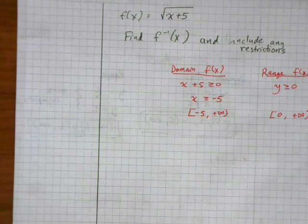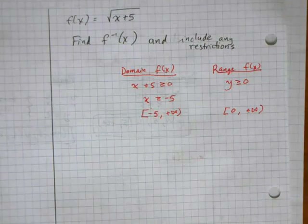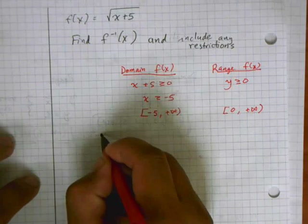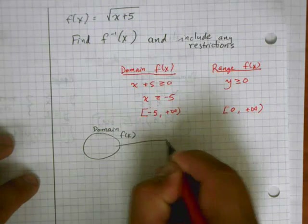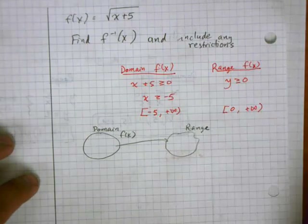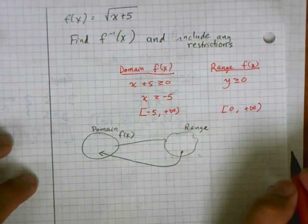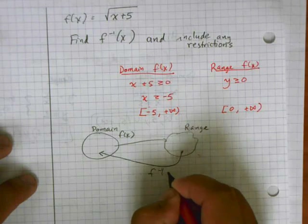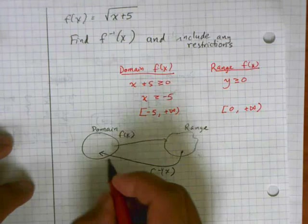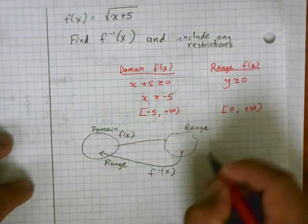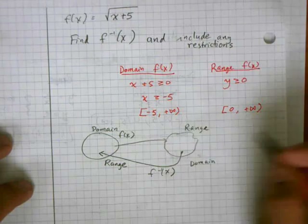Having these values for the original function is going to help a lot when I go and actually find the inverse function. If you recall, what an inverse function does is swap the range and the domain. So the domain of the original function maps to the range of f of x, but f inverse takes something from the range and puts it back into the domain. The domain of the original function is now the range for the inverse, and the range of the original function is now the domain for the inverse function.